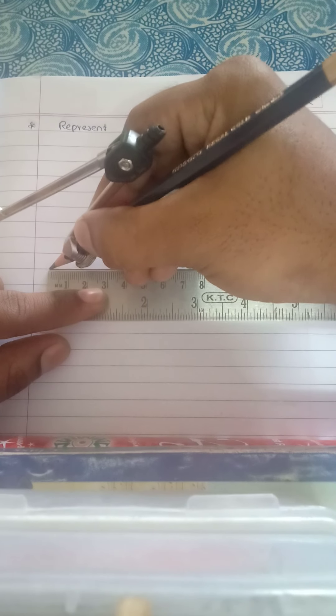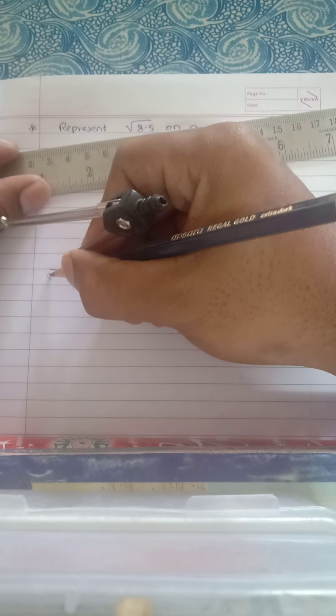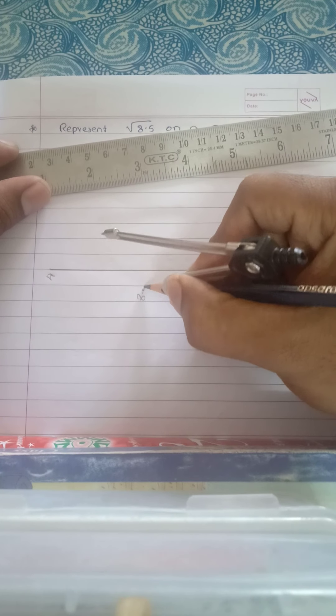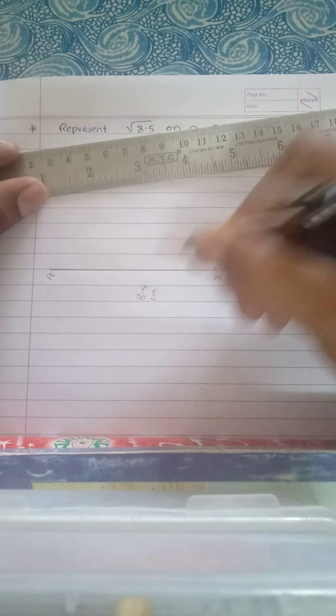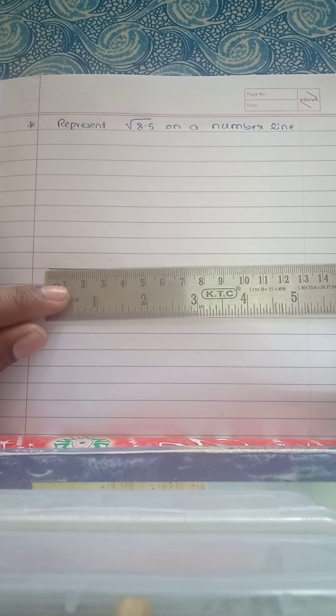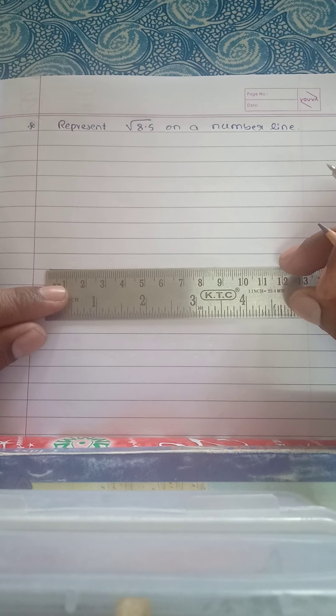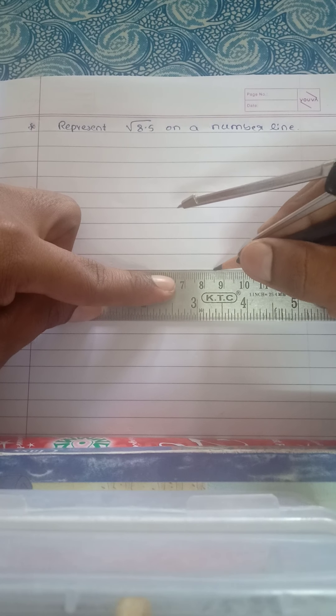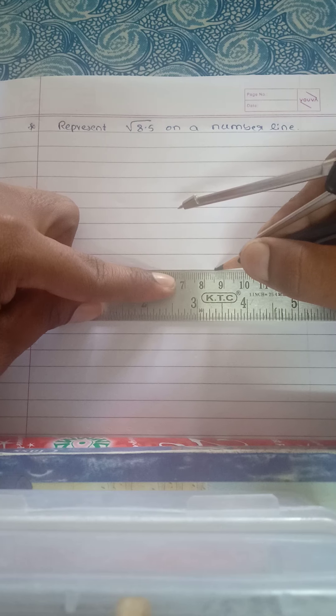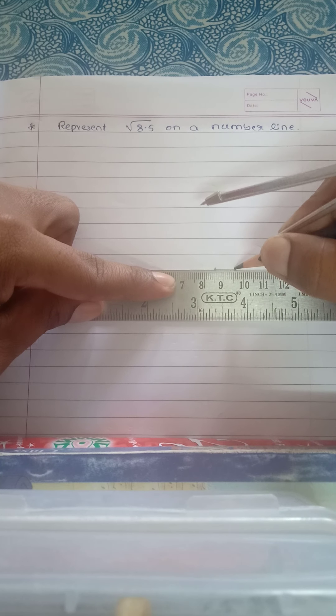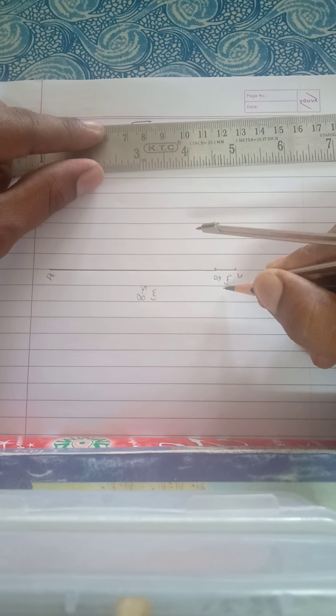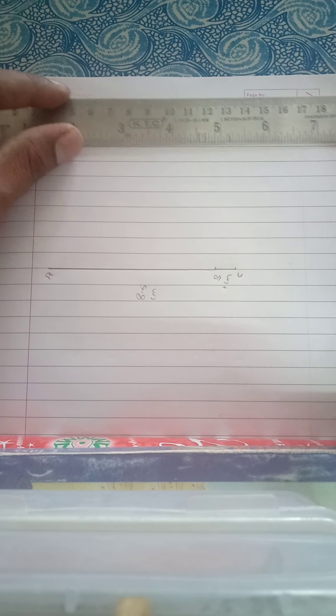So that 8.5 you may call it as AB. AB is 8.5 centimeters. That 8.5 centimeter line you extend up to one centimeter, that you may call it as BC. So BC is one centimeter.